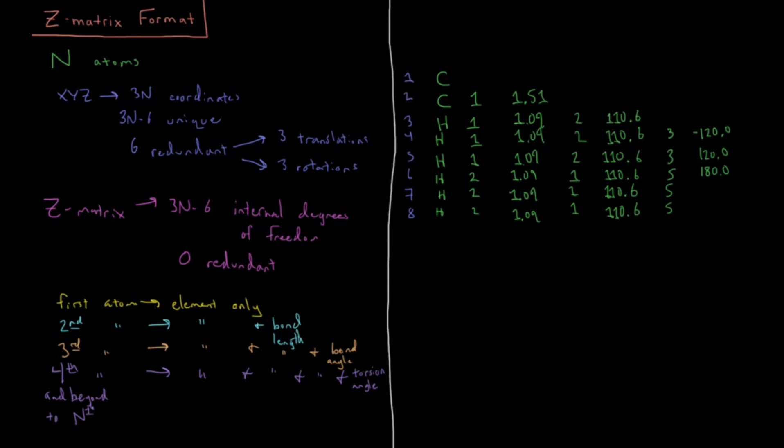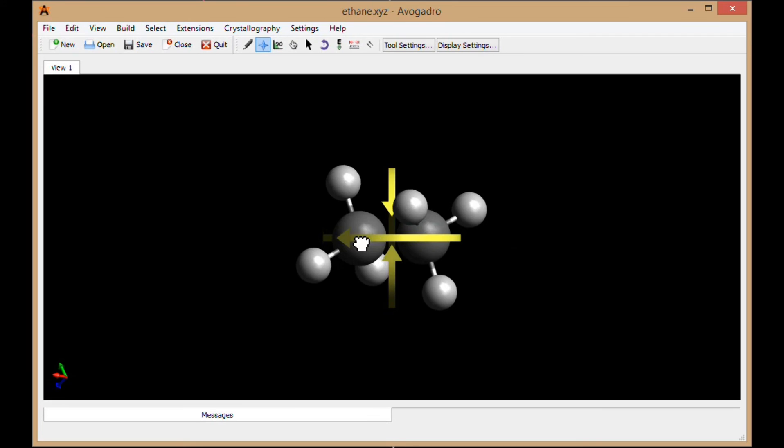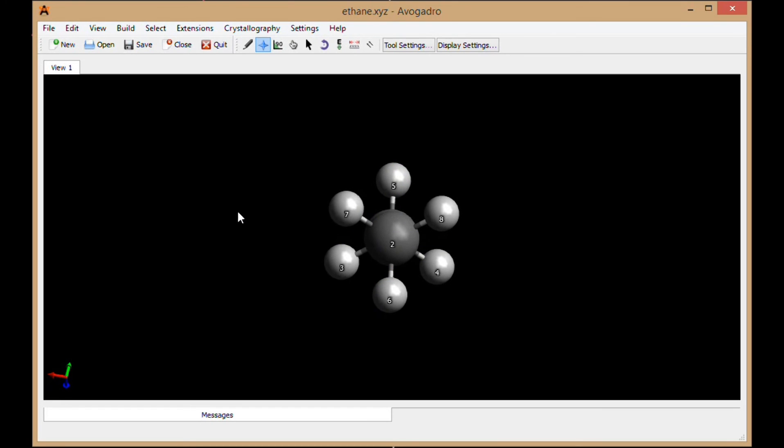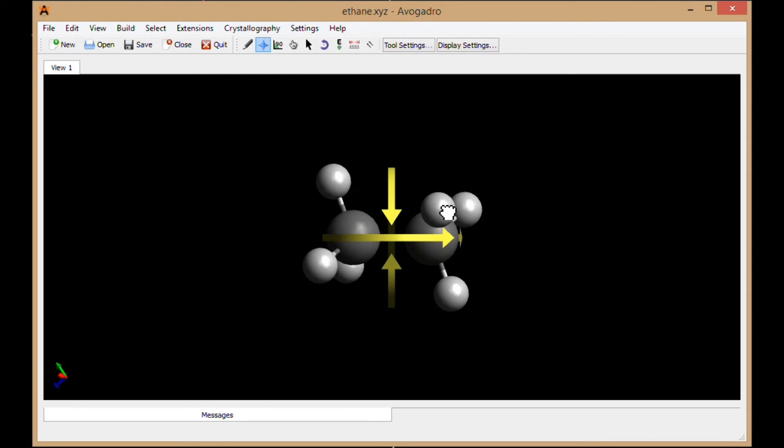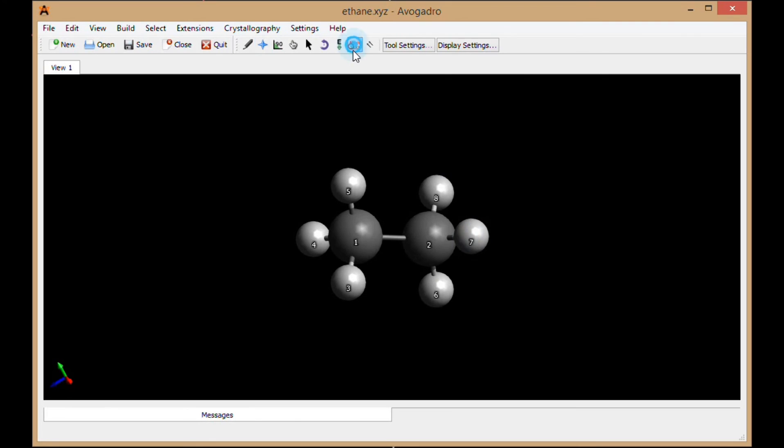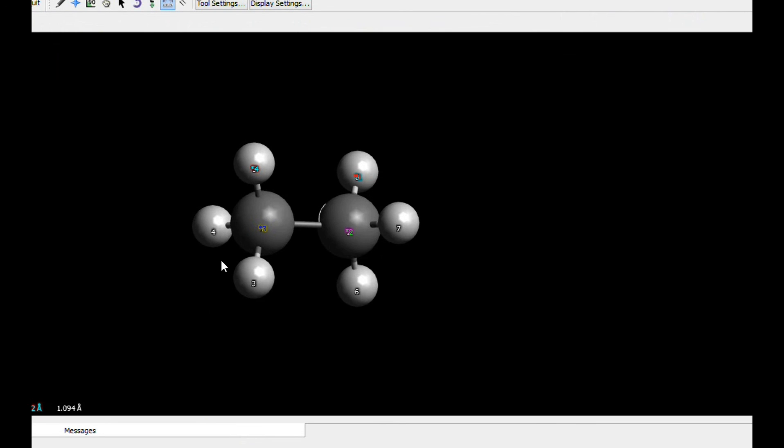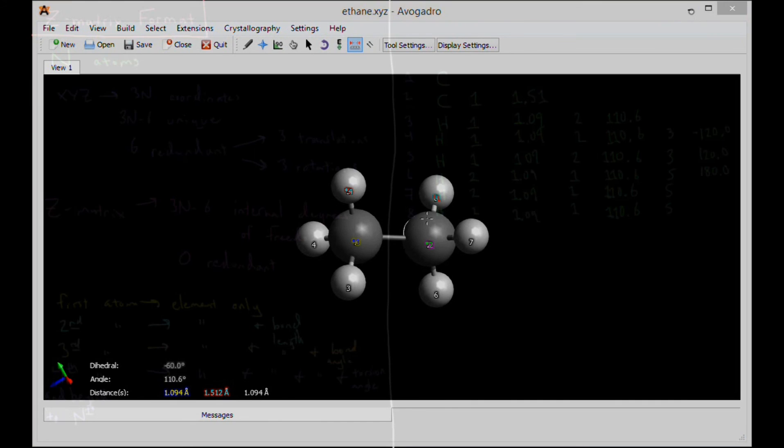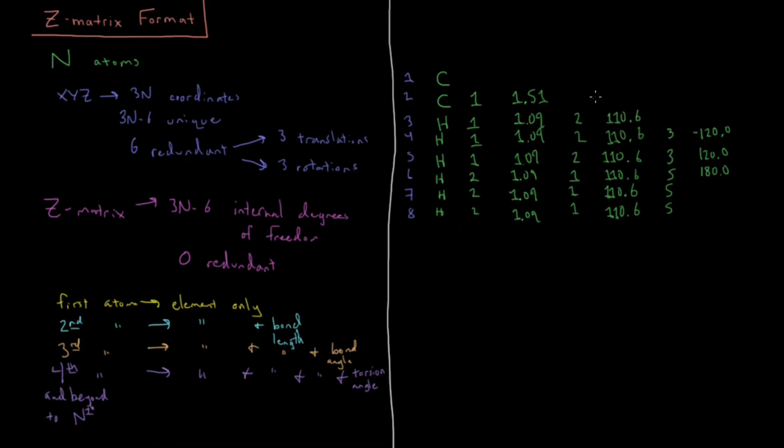And then number seven, let's see. I believe seven is going to be positive 60 degrees for the torsion, and eight is going to be negative 60 degrees for the torsion. So let's just confirm that. So we have seven, two, one, five. Positive 60. Eight, two, one, five. Minus 60. So then we have a positive 60 and a negative 60 there.